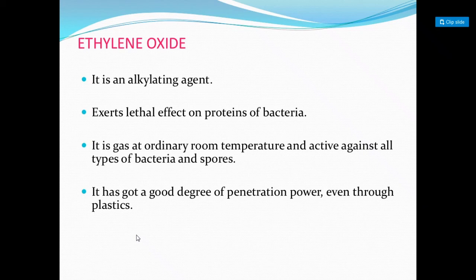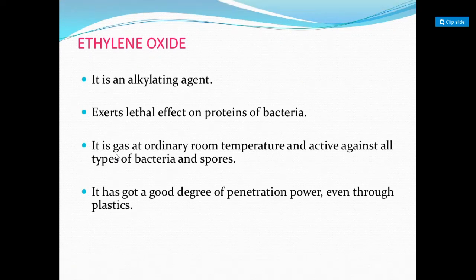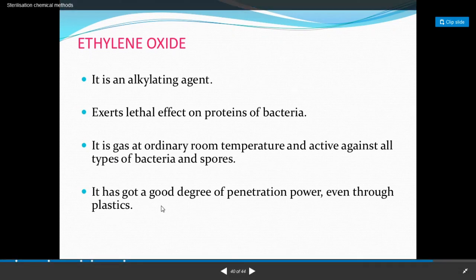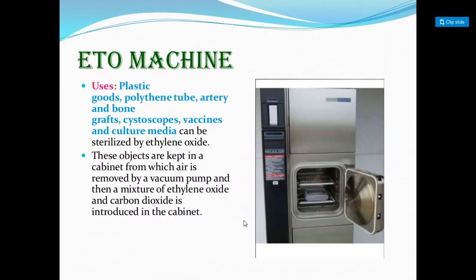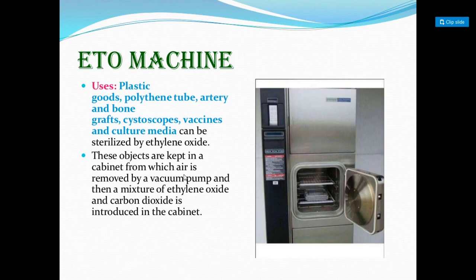Ethylene oxide is a gaseous sterilizing agent and an alkylating agent that exerts lethal effects on proteins of bacteria. It is a gas at ordinary room temperature and is active against all types of bacteria and spores, with good penetrating power even through plastics. Uses include sterilization of plastic goods, polythene tubes, artery and bone grafts, cystoscopes, vaccines, and culture media. Objects are kept in a cabinet from which air is removed by a vacuum pump, then a mixture of ethylene oxide and carbon dioxide is introduced.